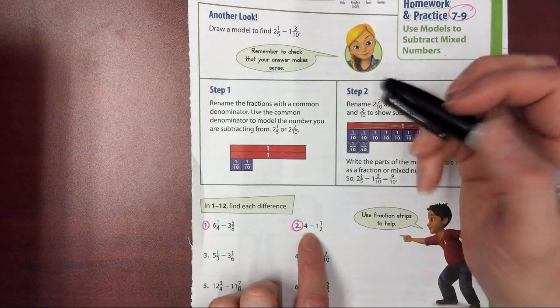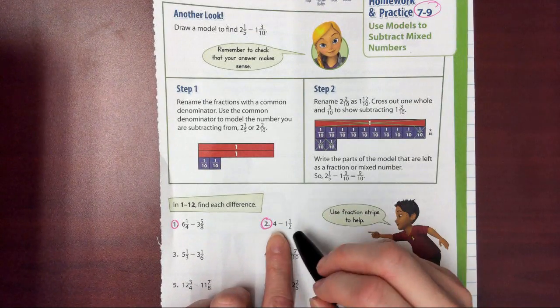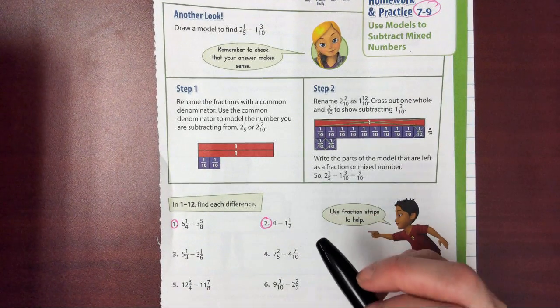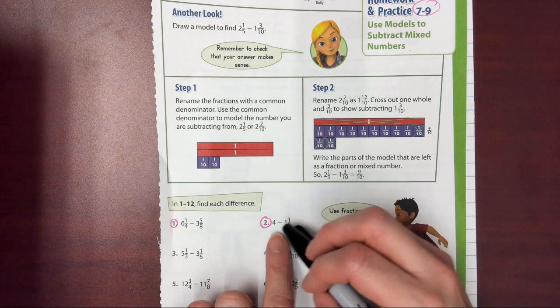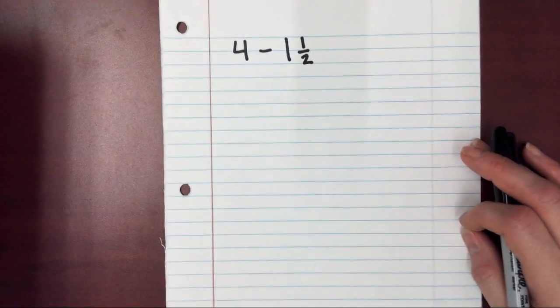Okay, so now we're going to do on Worksheet 7-9, number 2, which is 4 minus 1 and 1 half. I've already written that down on my paper. I'm going to set my worksheet aside.